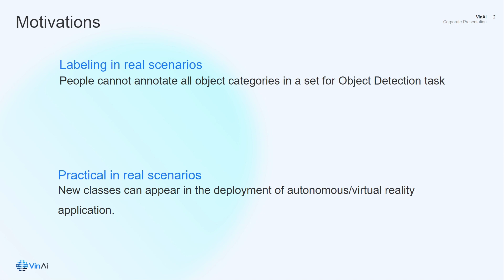Some of the challenges of object detection in real scenarios are: first, people cannot annotate all object categories in a set for object detection tasks. Also, new classes can appear when deploying autonomous or virtual reality applications.